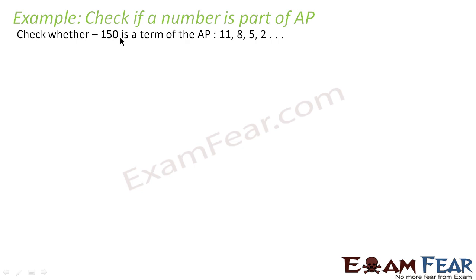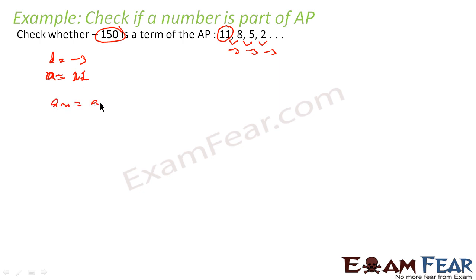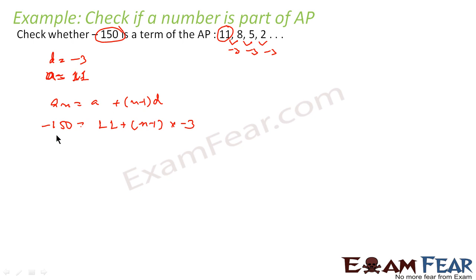In this example, we have to check whether minus 150 is a part of this AP or not. In this AP the difference is minus 3, because 5 minus 8 is minus 3 and 2 minus 5 is minus 3. So d is equal to minus 3 and the first term a is equal to 11. Using the formula an equals a plus (n minus 1)d, we set an equal to minus 150 and solve for n.